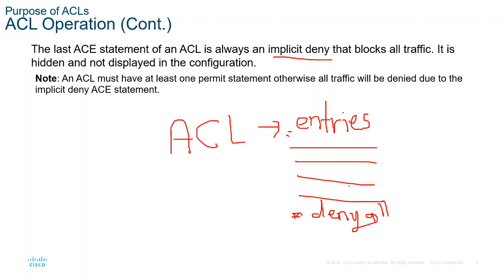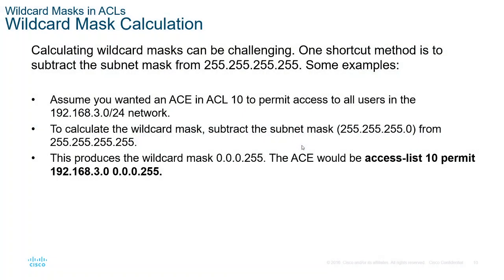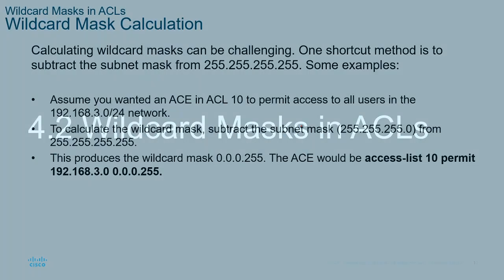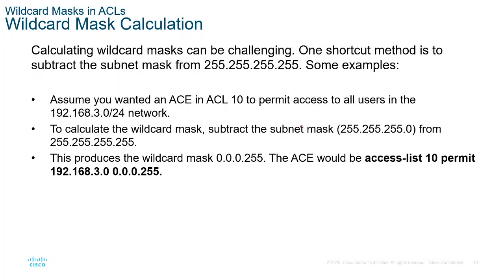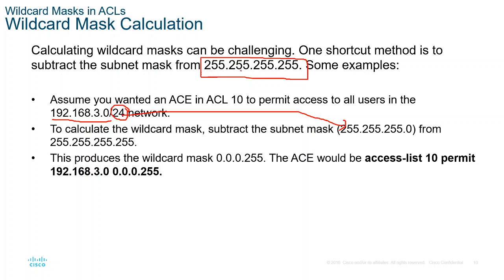Next is wildcard mask, which we already covered in CCNA 2. I'll just do a summarization. The shortcut method: we know all binary ones equals 255.255.255.255. For example, if we have network 10.0.0.0 slash 24, we know the subnet mask is 255.255.255.0.